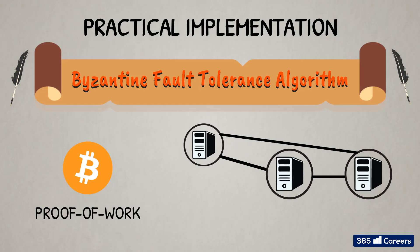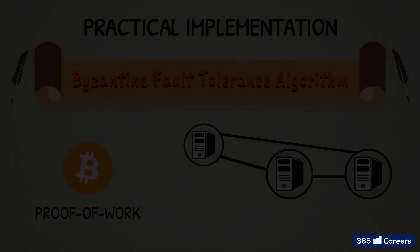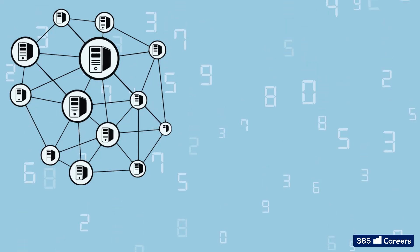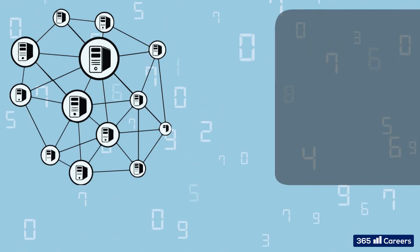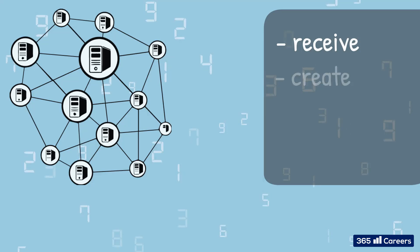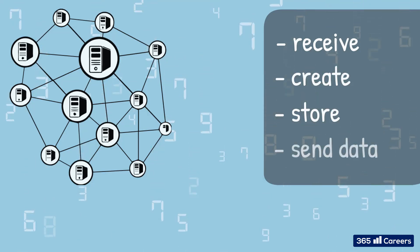To simplify, think of it in the following way. In the image we traditionally use to depict a blockchain, every single computer is a separate node. They are all connected and can receive, create, store, and send data to each other.